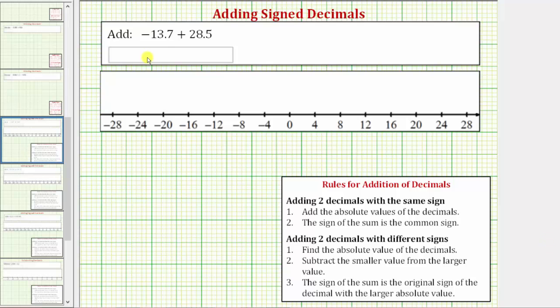We're asked to add negative 13.7 plus 28.5. The first thing to recognize here is that the positive 28.5 will outweigh the negative 13.7, and therefore the sum will be positive.